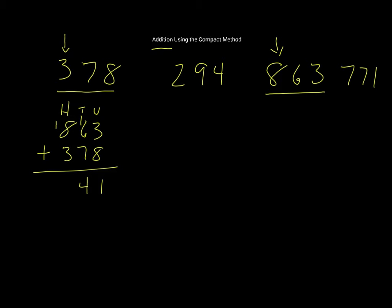I now have 300 add 800 add 100. So 800 plus 100 is 900, plus 300 will be 1241 altogether.